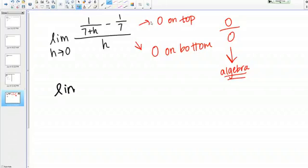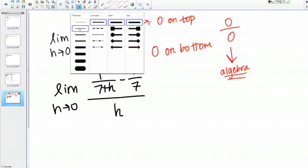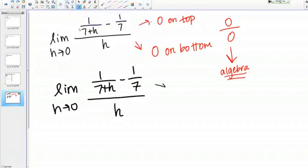Let me rewrite this. Let's look at what that common denominator in the top is going to be. The common denominator is just going to be the product of the two denominators. The common denominator is going to be 7 times 7 plus H.